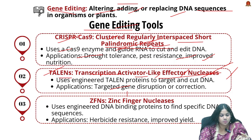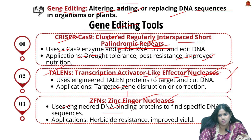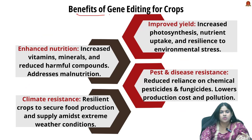Next is ZFNs — Zinc Finger Nucleases. It is an engineered DNA binding protein used to find specific gaps in sequences. It is used in creating crops with traits like herbicide resistance and improved yield, also using DNA binding proteins to find specific DNA sequences.